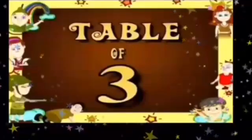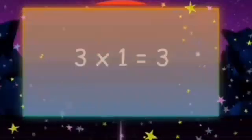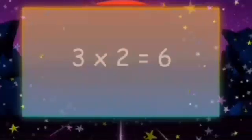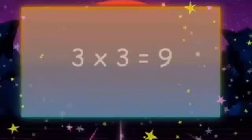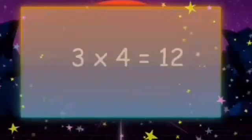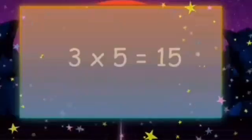This is the table of 3. 3 0s are 0. 3 1s are 3. 3 2s are 6. 3 3s are 9. 3 4s are 12. 3 5s are 15.